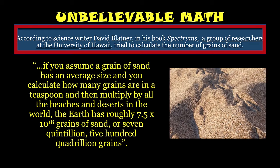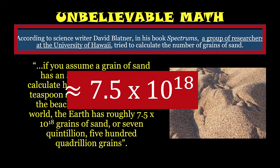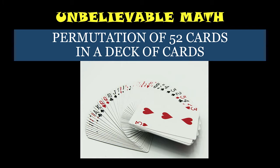That is equivalent to 7,500,000,000,000,000,000 grains. That's a big number. That is approximately equal to 7.5 × 10^18. If you find the number of ways 52 cards can be rearranged uniquely, we are going to permute 52 objects taken 52 at a time.